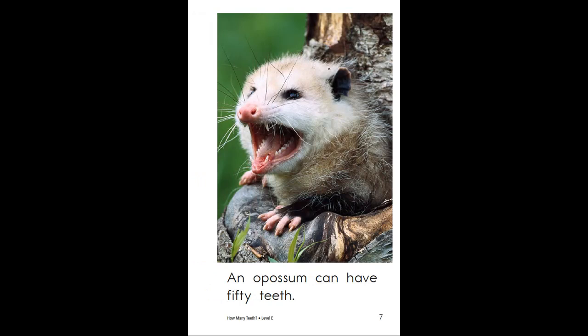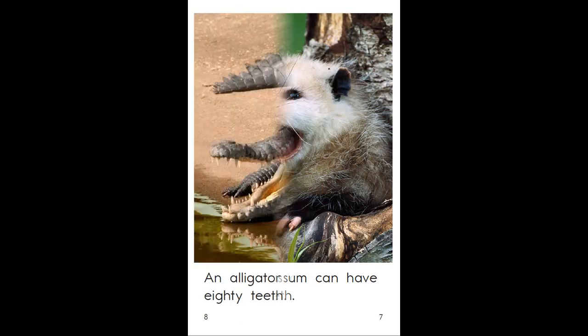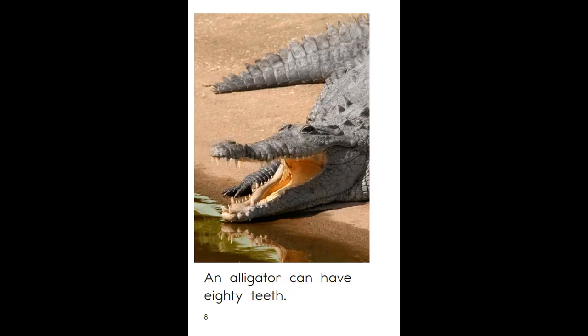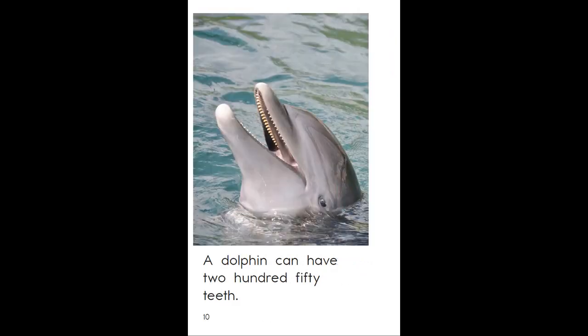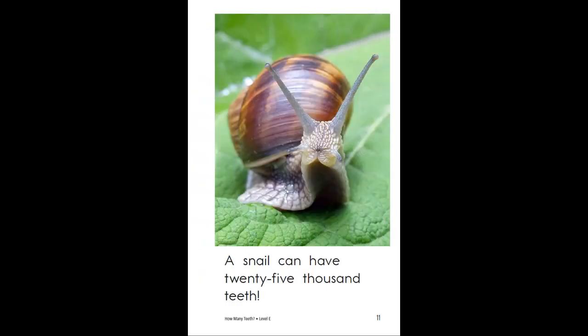An opossum can have 50 teeth. An alligator can have 80 teeth. A sand tiger shark can have 96 teeth. A dolphin can have 250 teeth. A snail can have 25,000 teeth.